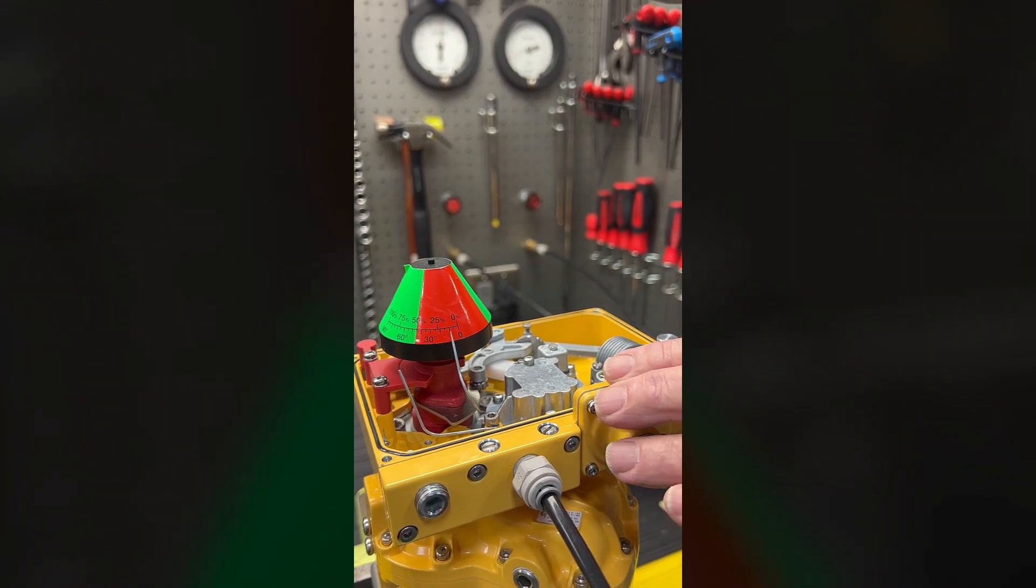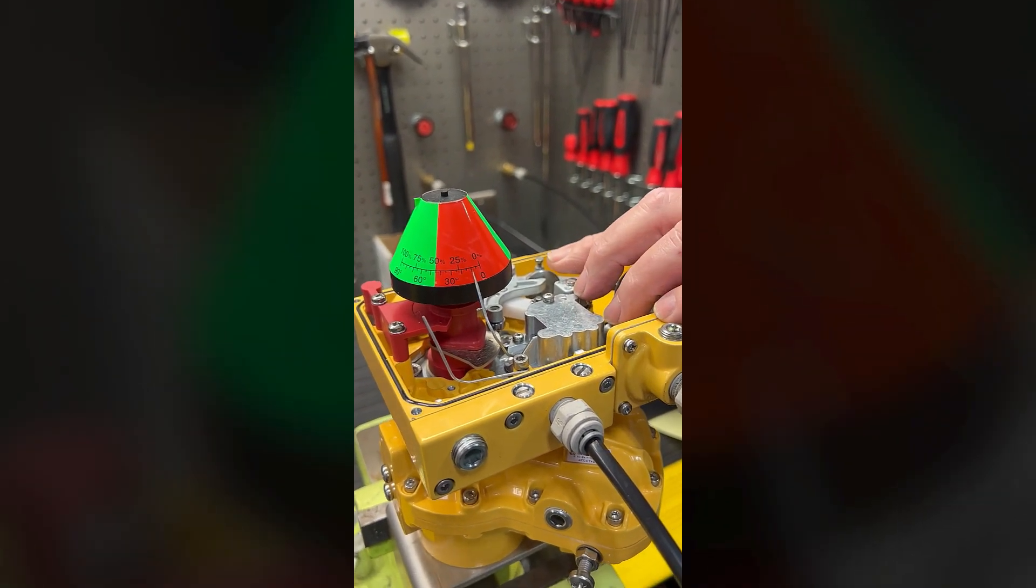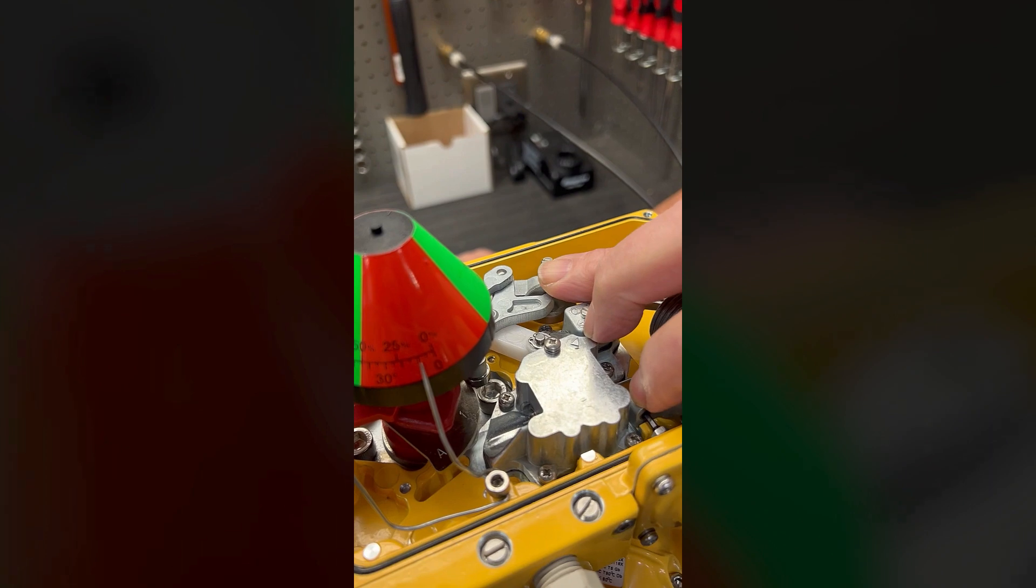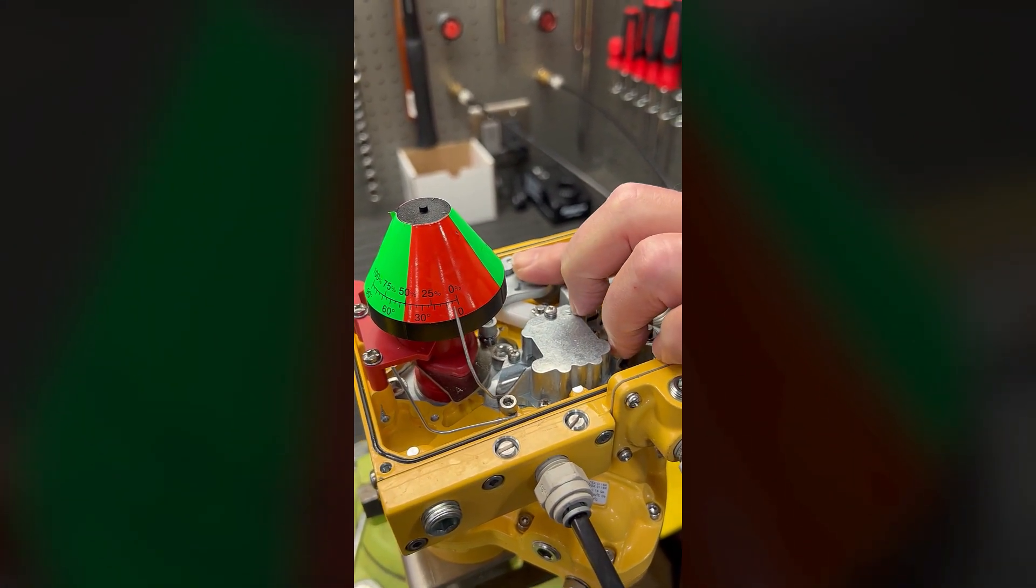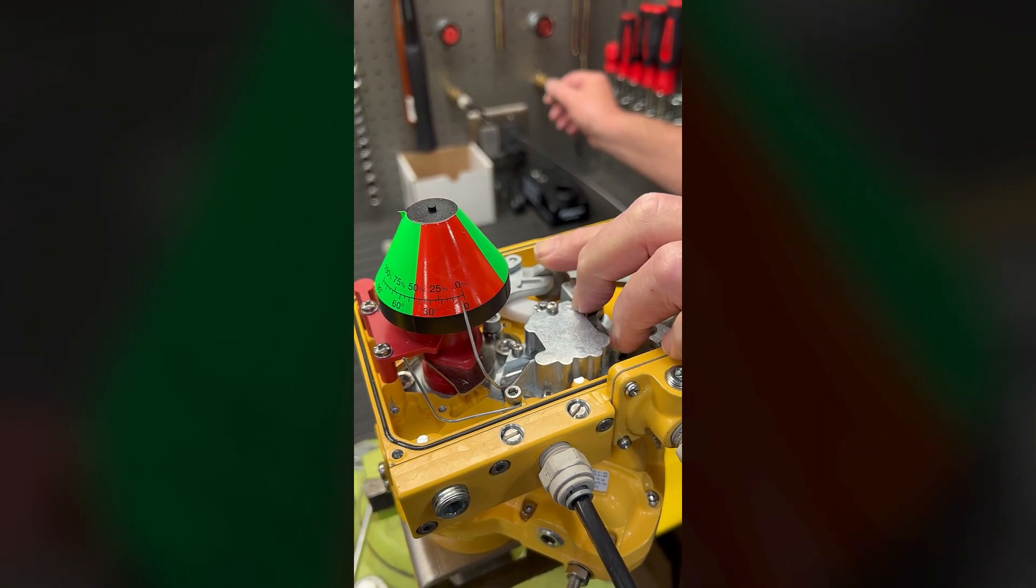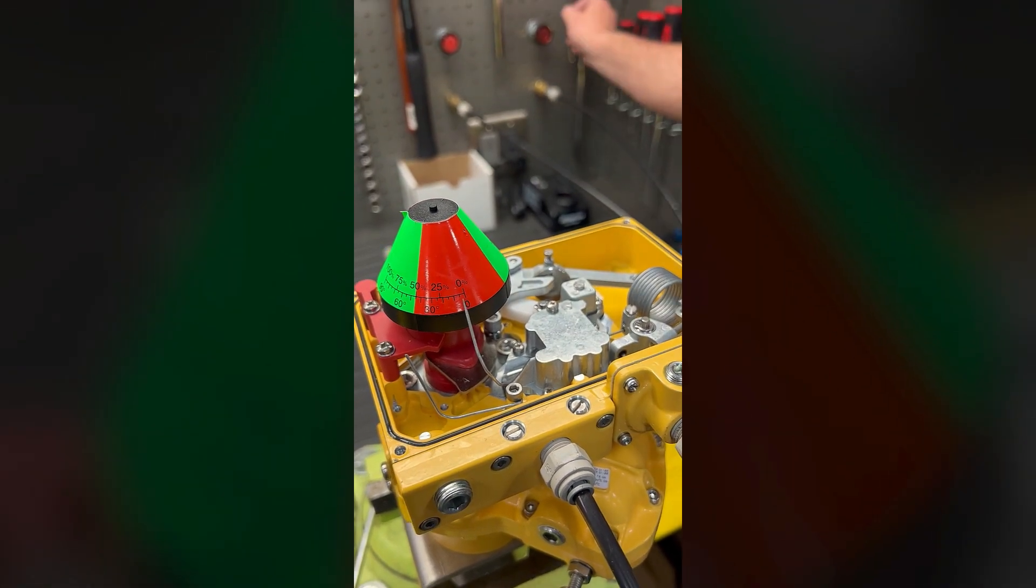So what we can do is on the zero adjusting knob, we can turn that in the anti-clockwise direction and that's going to make our positioner go closed.